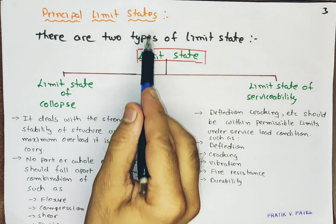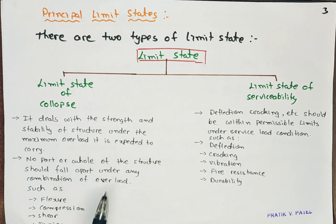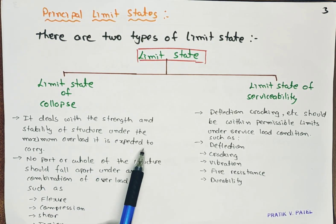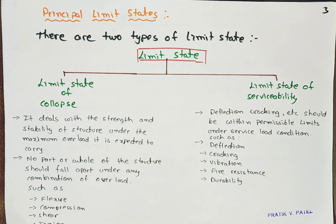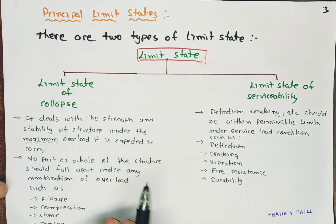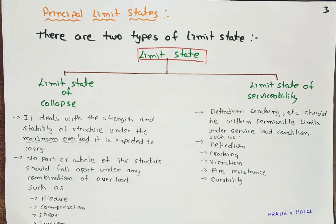So these are the two principal limit states we will be understanding today. First, we'll go with the limit state of collapse. What does it mean? It deals with the strength and stability of the structure under the maximum overload it is expected to carry. We are dealing here with the maximum load any structure can take.